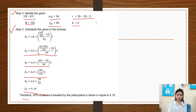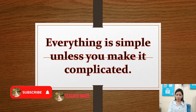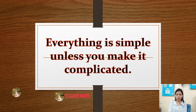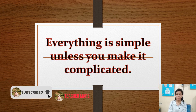Therefore, 40% of the distance traveled by the participants is below or equal to 9.19. That's all for today guys. This is Teacher Morris. Believe that everything is simple unless you make it complicated. Thank you everyone! See you in my next video! Bye bye!